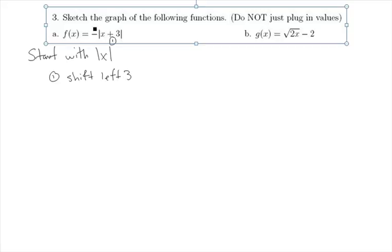The second transformation will take care of the negative sign. The negative on the outside of the absolute values, and not next to the x, means that we're going to reflect the graph across the x-axis. So there's our instructions.